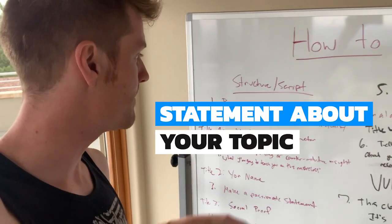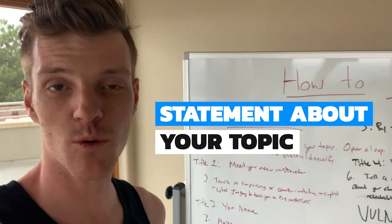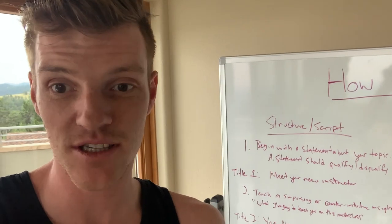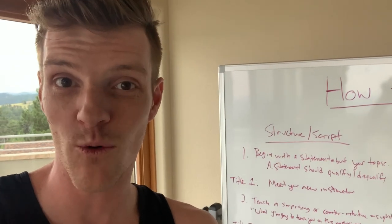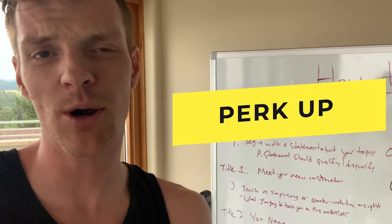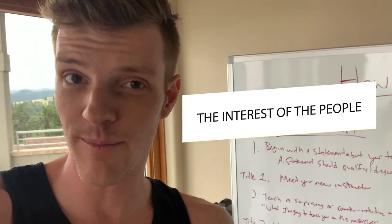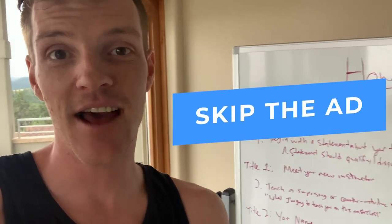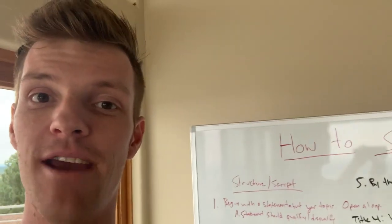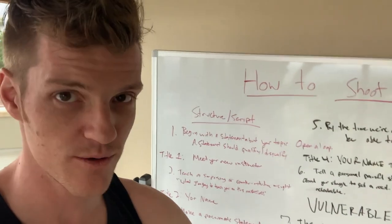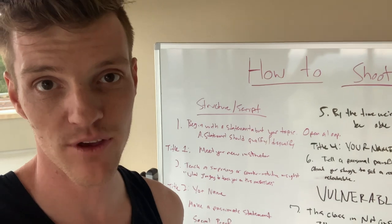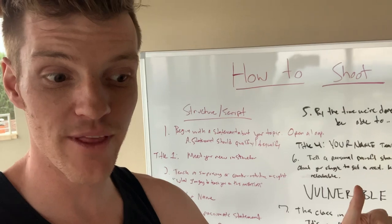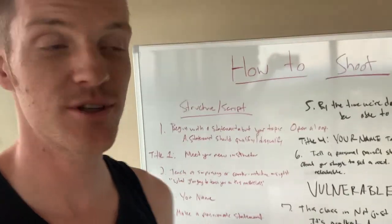Number one: begin with a statement about your topic that qualifies or disqualifies your desired customer. If you're targeting real estate agents, make a statement about real estate to perk up the interest of potential customers and encourage others to skip. On YouTube, you only pay for viewers who actually watch your ad — anyone who skips right away costs you nothing. So make it clear: we want ideal customers watching, everyone else should skip.